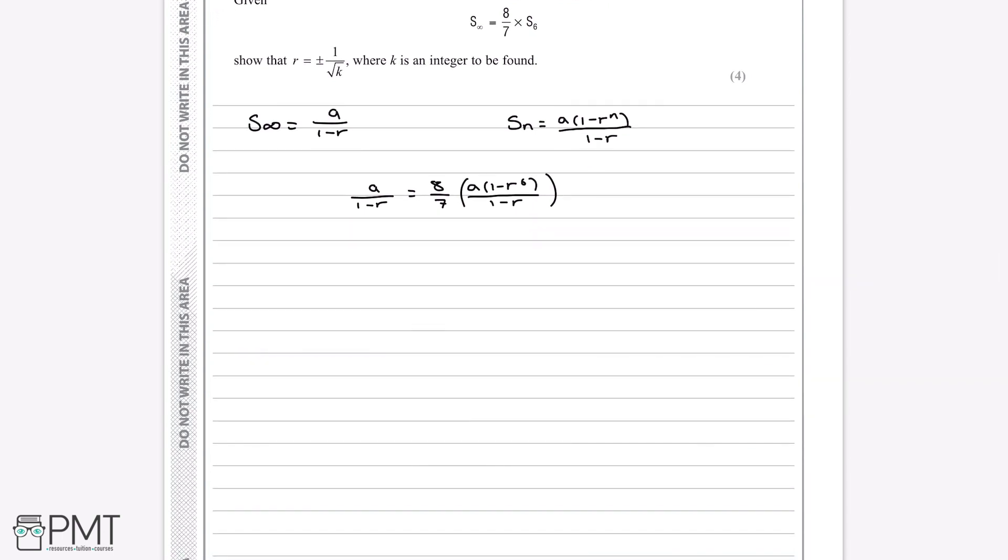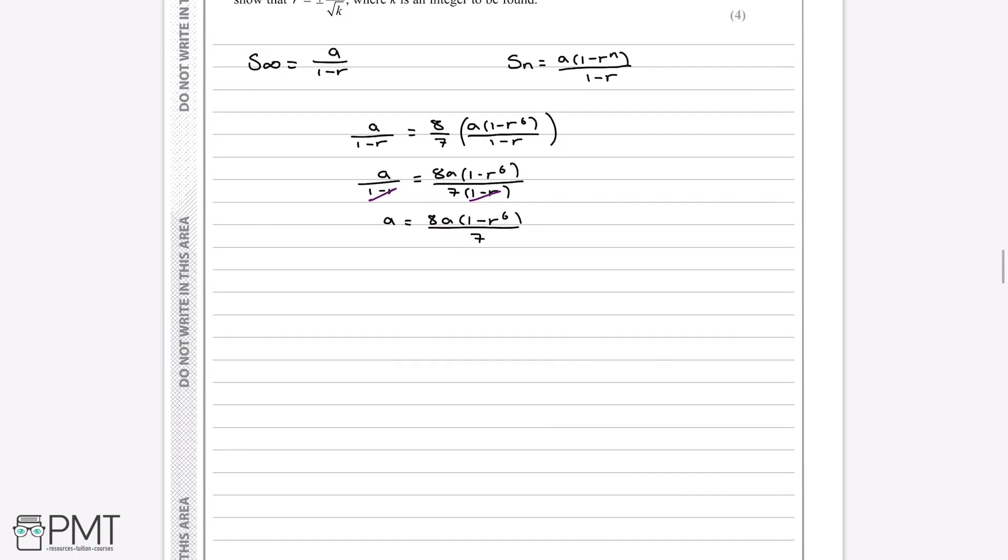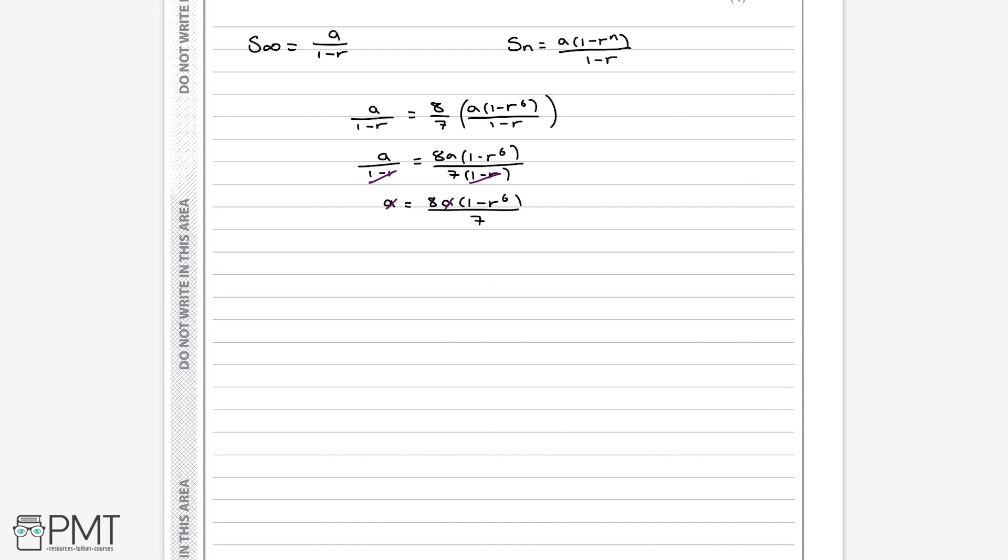So now if we go to simplify this formula, we can start out by multiplying out the brackets on the right hand side. So we'll have 8a multiplied by 1 minus r to the power of 6, all over 7 multiplied by 1 minus r. Now you can see on both sides that there's a 1 minus r in the denominator, so if we multiply both sides by 1 minus r, these two will cancel out and we're left with a is equal to 8a multiplied by 1 minus r to the power of 6, all over 7. Now there's also an a on both sides, so if we divide both sides by a, we're left with 1 is equal to 8 multiplied by 1 minus r to the power of 6 over 7, and then if we multiply both sides by 7 and then divide by 8, we'll be left with 1 minus r to the power of 6 is equal to 7 over 8.